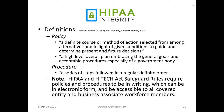It's important to understand the basic definitions. A number of people we've spoken to really don't understand what a policy is. It's a definite course or method of action selected from among alternatives and in light of given conditions to guide and determine present and future decisions — or a high-level overall plan embracing the general goals and acceptable procedures, especially of a government body. A procedure associated with each policy is the steps you're actually taking to accomplish the goal of protecting the information. Both HIPAA privacy and security rules and the HITECH Act rule require policies and procedures to be in writing. They can be in electronic form, which we recommend, and they have to be accessible to all covered entity and business associate workforce members.